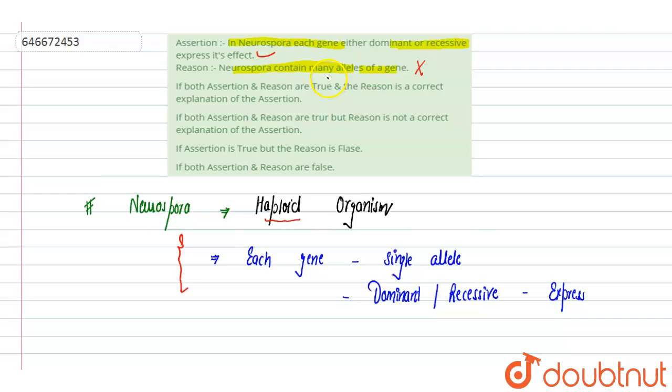So this is incorrect. Assertion is true, reason is false. Both are true? Wrong. Both are true? Wrong. Assertion true, reason false? Correct. Both are false? Wrong. Option C, that is correct.